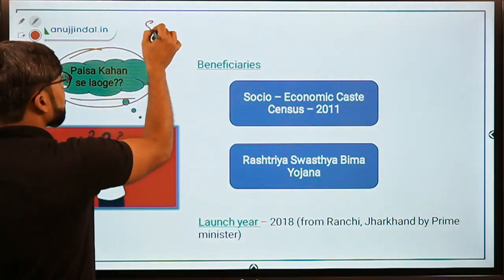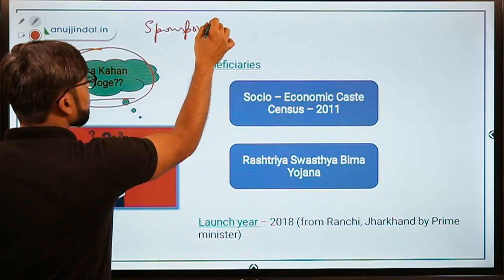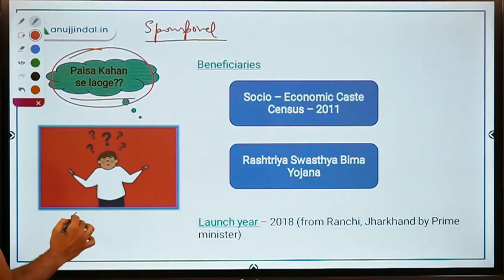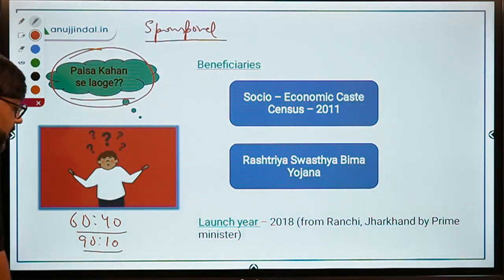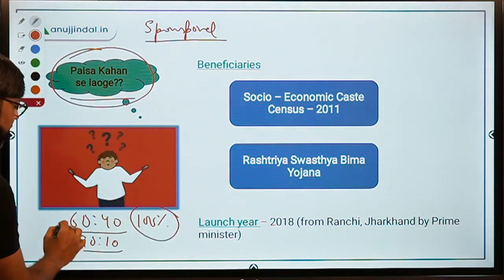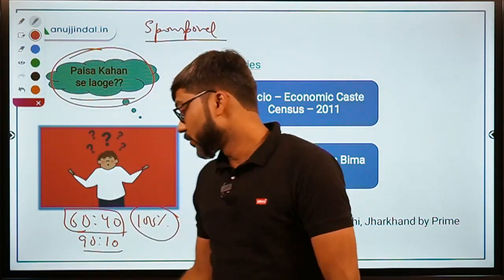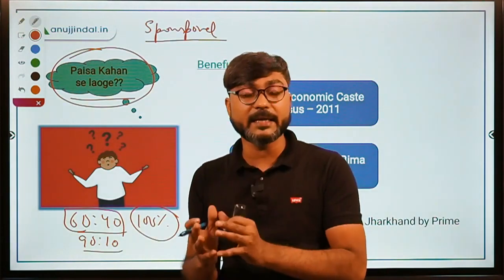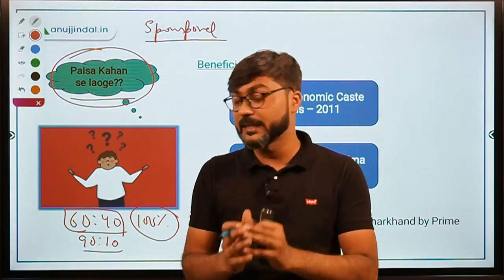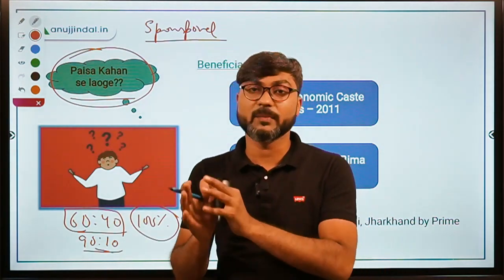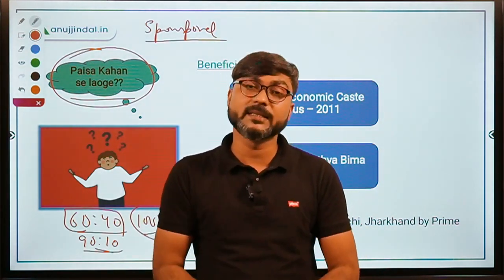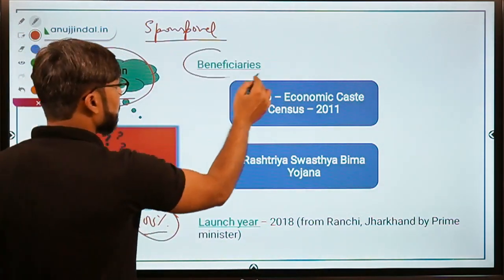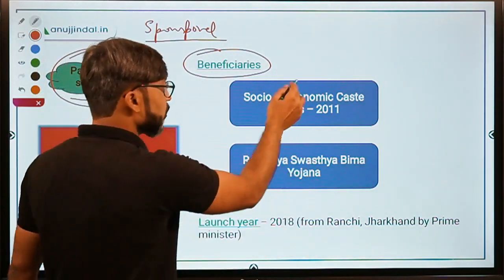This is a Centrally Sponsored Scheme. The funding pattern is: 60:40 ratio for general states, 90:10 for Himalayan and Northeastern states, and 100% central funding for Union Territories without a legislature. For UTs with a legislature it is 60:40.